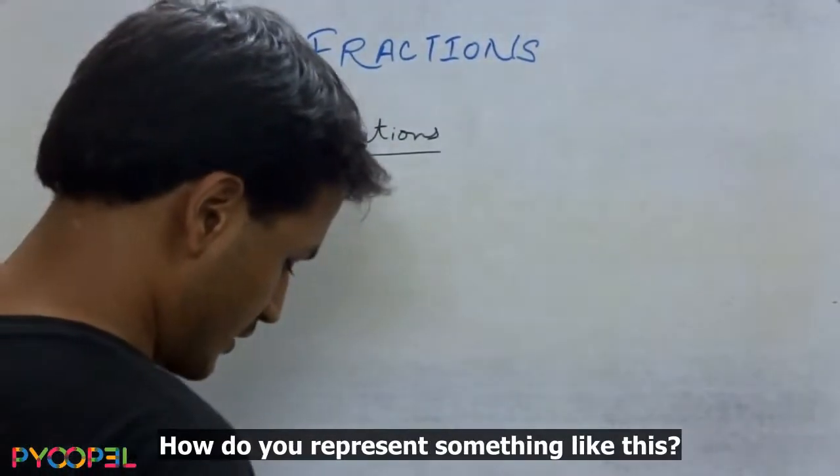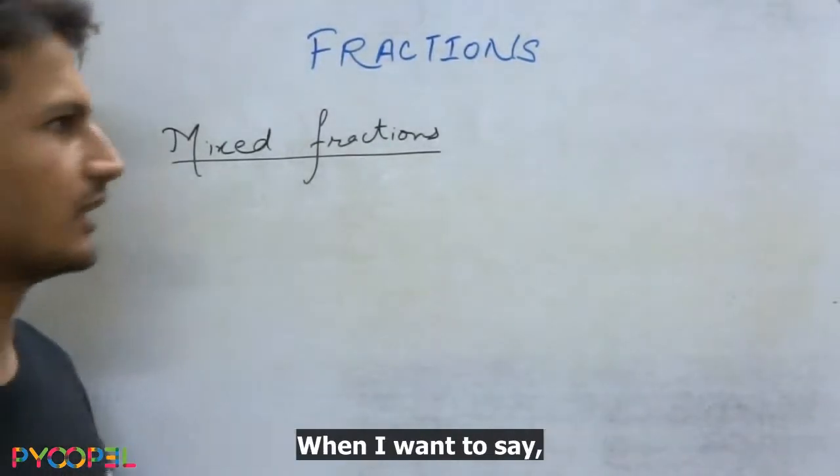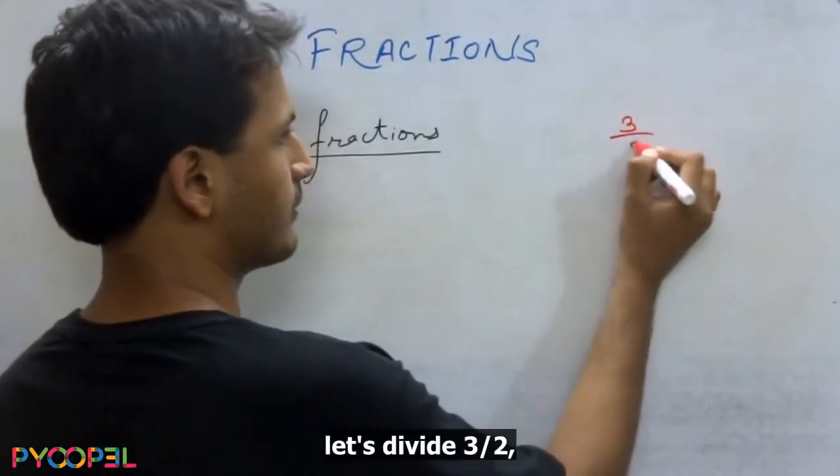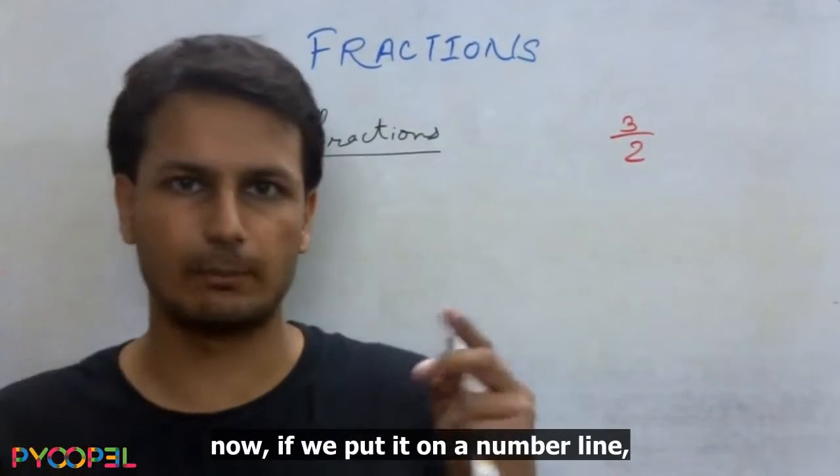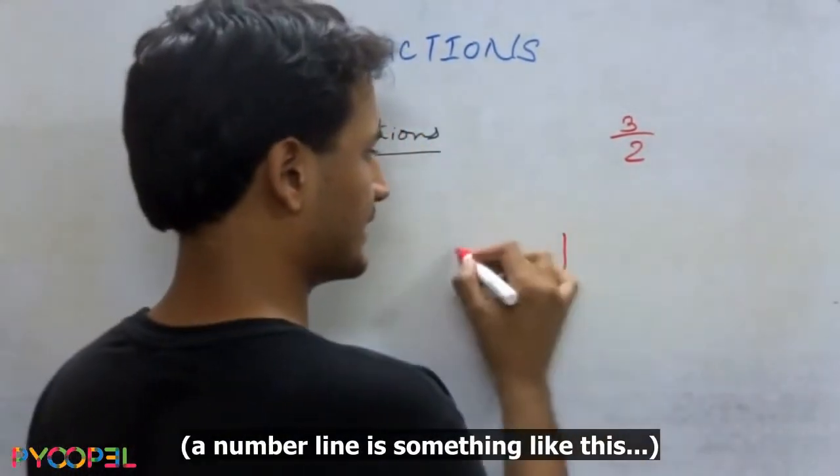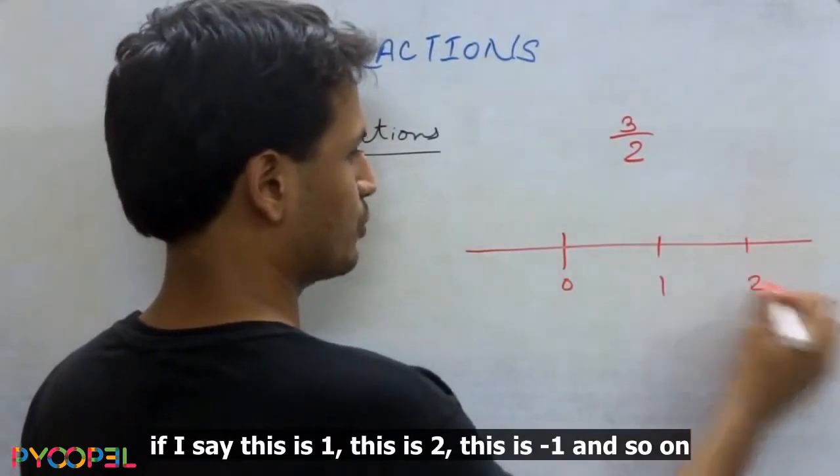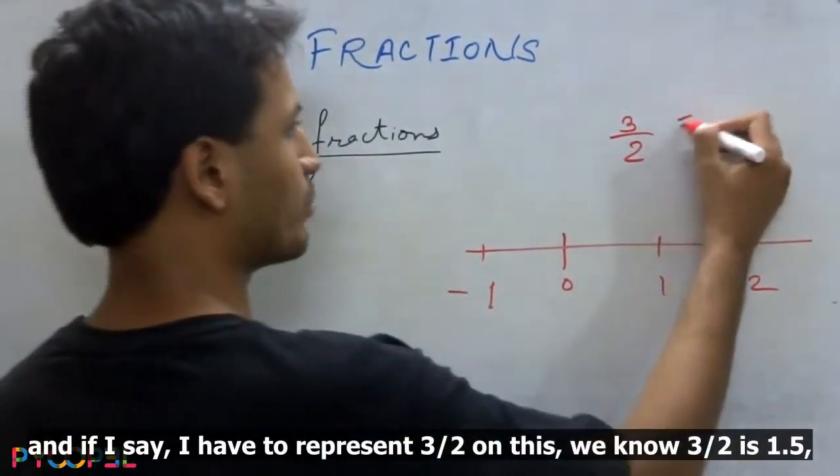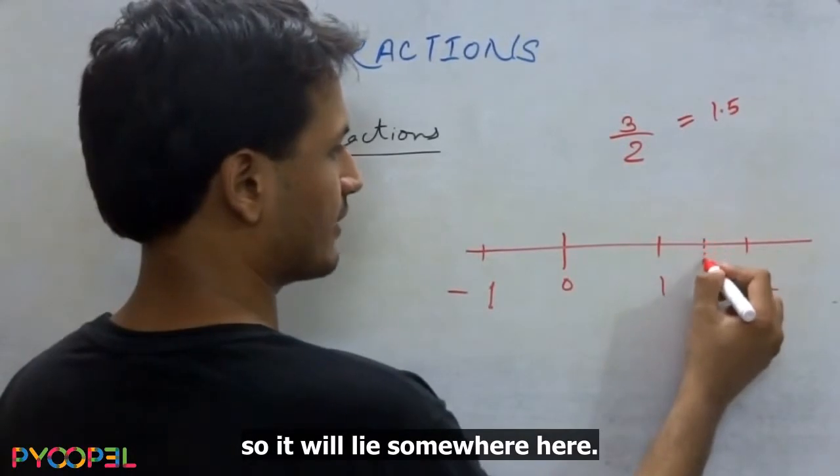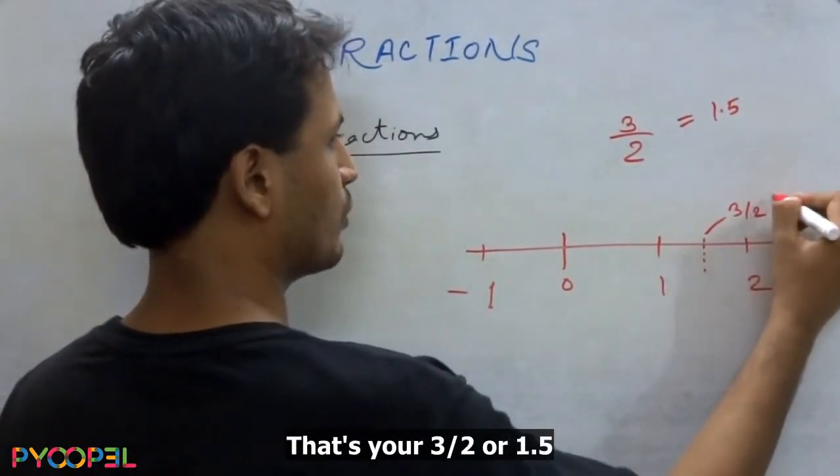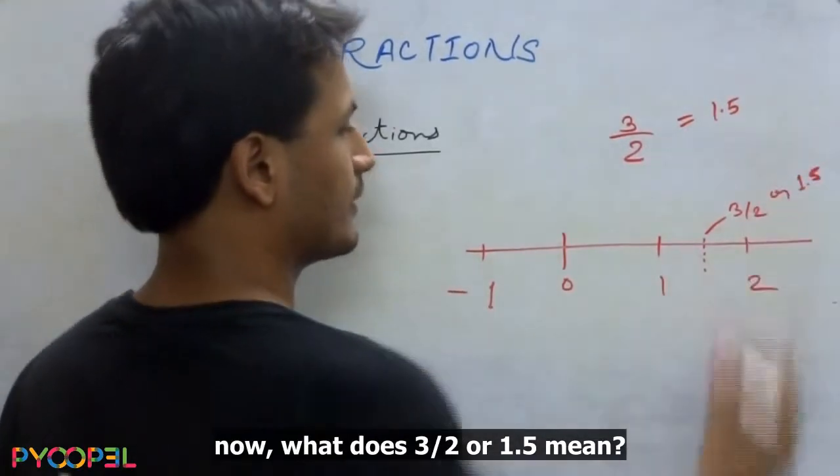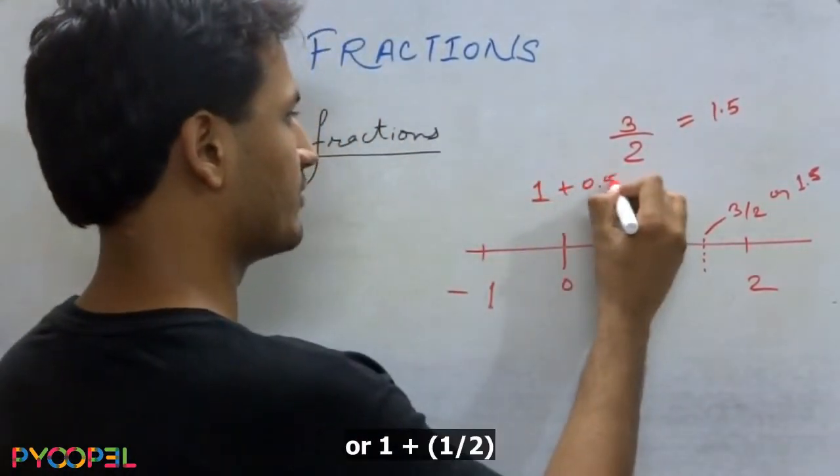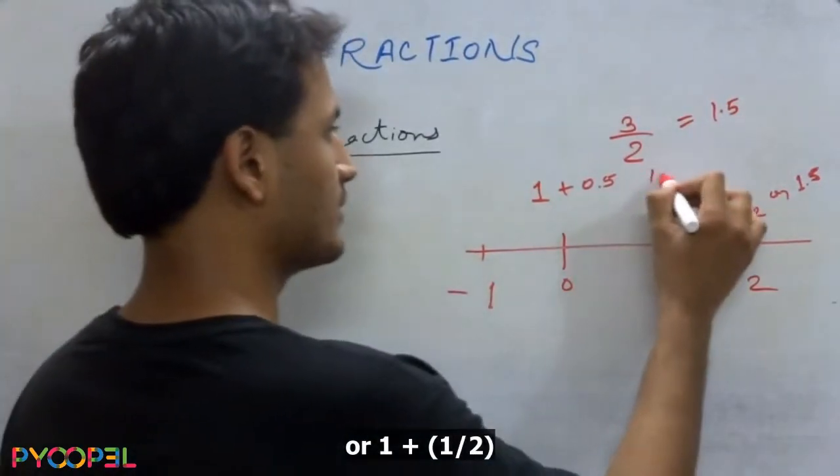Now how do you represent something like this? When I want to say let's divide three by two. If we put it on a number line, if I say this is one, this is two, this is minus one, and so on. And if I say I have to represent three by two on this, we know three by two is one point five, right? So it will lie somewhere here. That's your three by two or one point five. Now what does three by two or one point five mean? It means that I have one plus zero point five or one plus one by two.